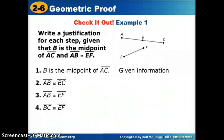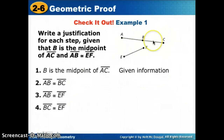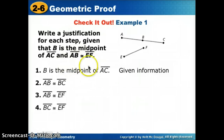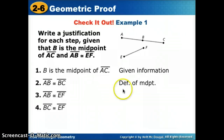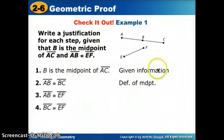The next step is that AB is congruent to BC. How do we know that? The previous step talked about the midpoint, and we've learned that midpoint means it's the point in the middle that divides the segment into two equal parts. So the reason those are congruent is the definition of midpoint. Then AB is congruent to EF — that was also given, so the justification is 'given information.'